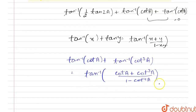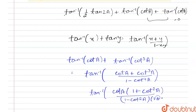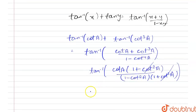We take cot a as a common factor from the numerator, giving cot a times (1 + cot²a) in the numerator. The denominator becomes (1 − cot²a)(1 + cot²a). The (1 + cot²a) terms cancel out, leaving tan inverse of (cot a) divided by (1 − cot²a).